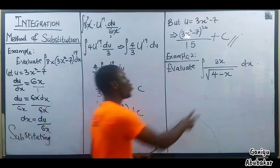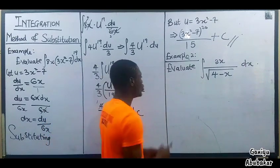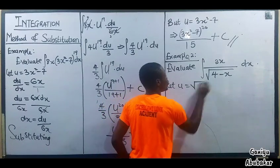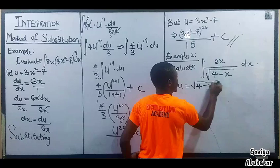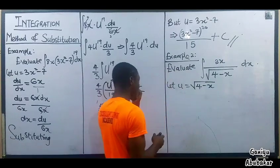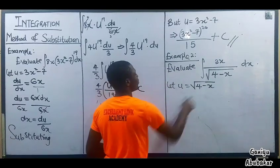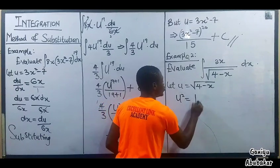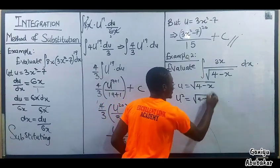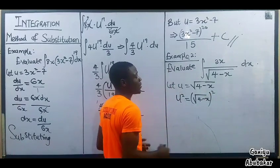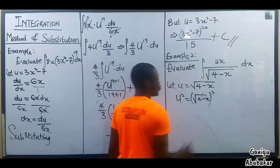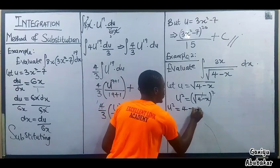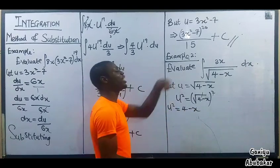Let u be equal to the square root of (4 - x). At this point, if I square both sides, I have u² = (√(4 - x))². The square and the square root cancel, giving u² = 4 - x.